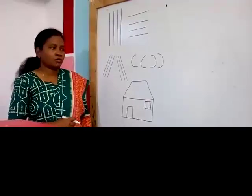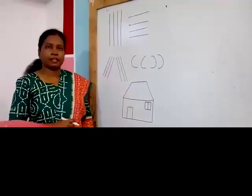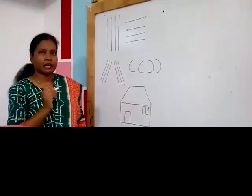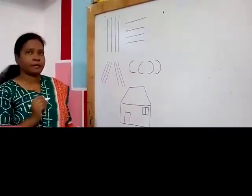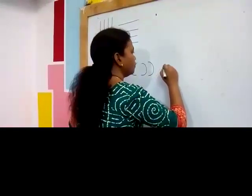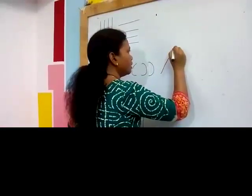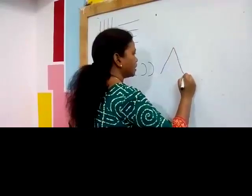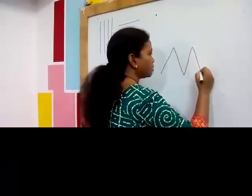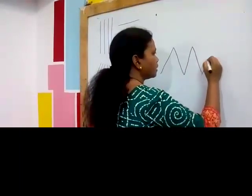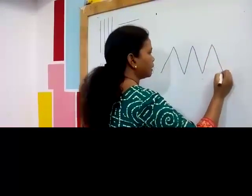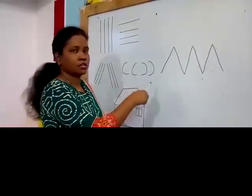Now, can we make a hill? Yes, we can. With the help of slanting line, we can make a hill. Forward slanting line, backward slanting line. Forward slanting line, backward slanting line. Forward slanting line, backward slanting line. Okay, now hill is also ready.